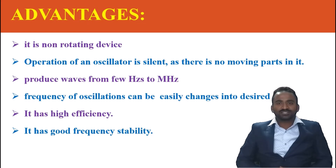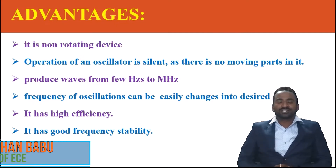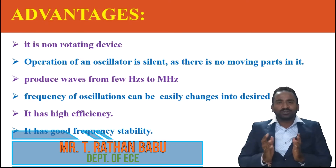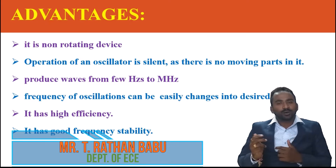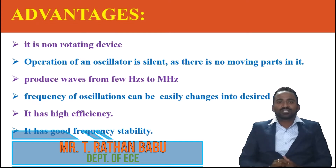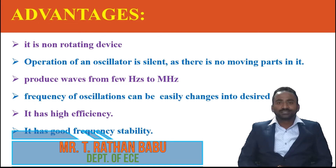Now let us look into advantages of oscillators. It is a non-rotating device — due to the absence of moving parts, the operation of an oscillator is quite silent. It can produce waves from few hertz to several megahertz, including sine wave, square wave, triangular, rectangular, or sawtooth. The frequency of oscillations can be easily changed to the desired one, and it has high frequency and good frequency stability. These are the major advantages of oscillators.